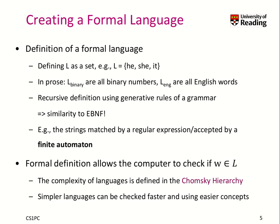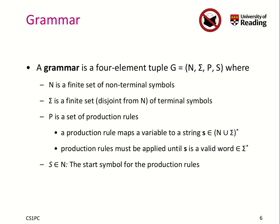A grammar is one way of describing generative rules, similar to EBNF, which define our language. A grammar is a four-element tuple G = (N, sigma, P, S), where N is the set of non-terminal symbols, sigma is the set of terminal symbols (different from N), P is the set of production rules, and S is the start symbol.